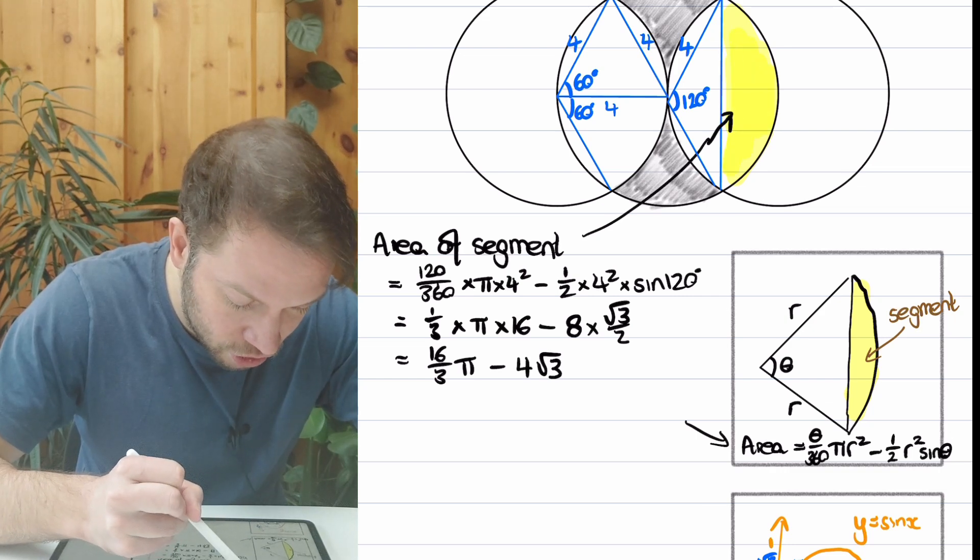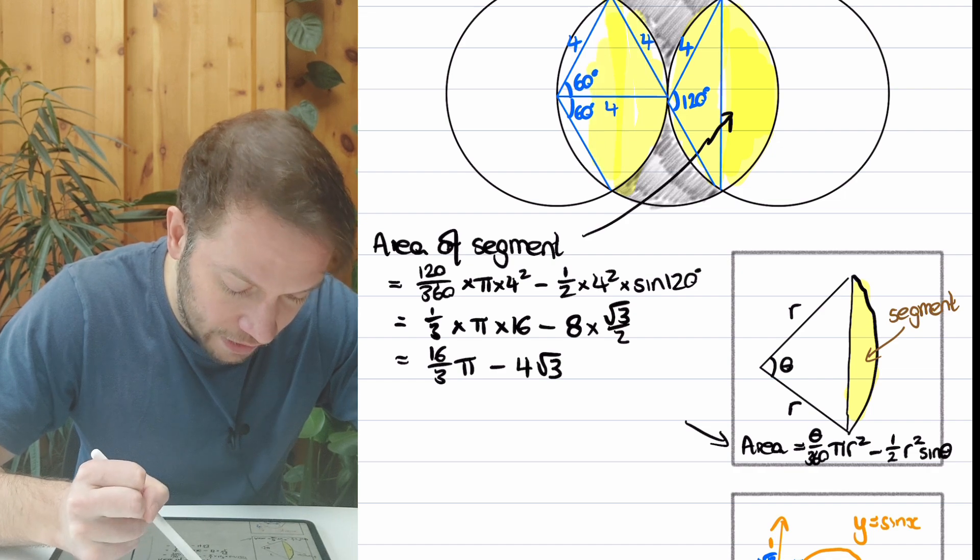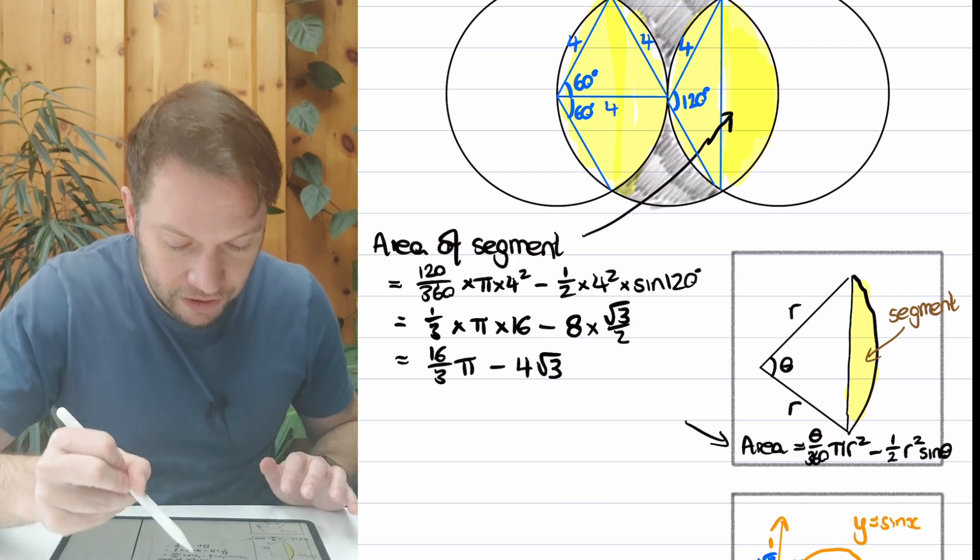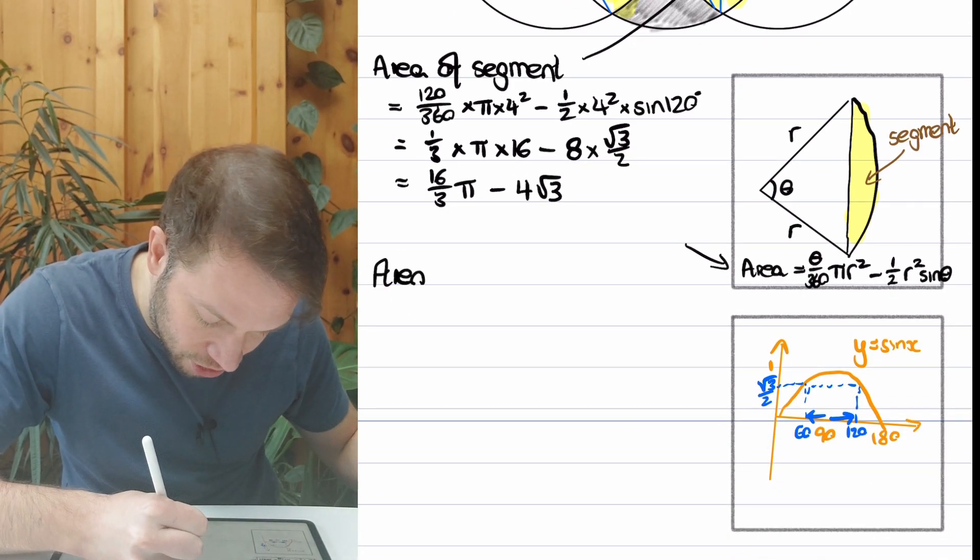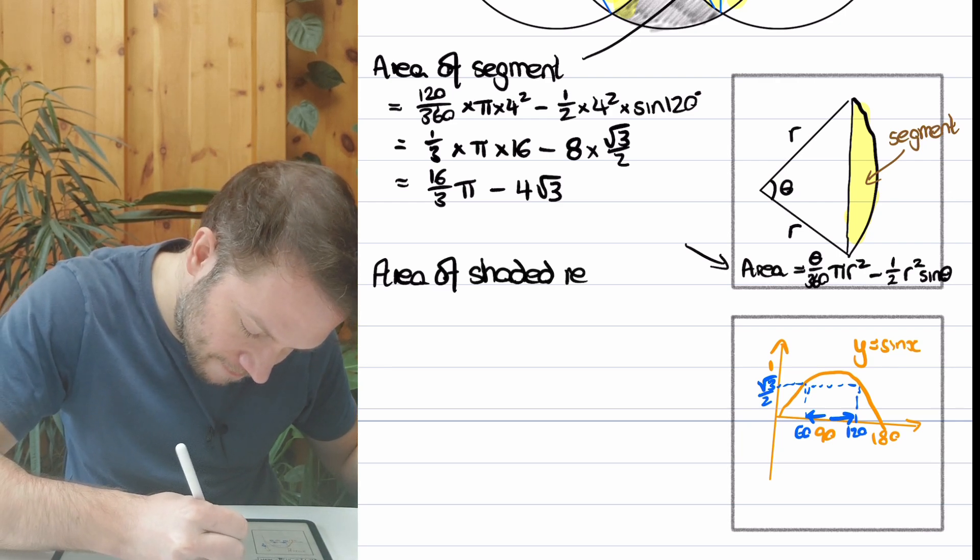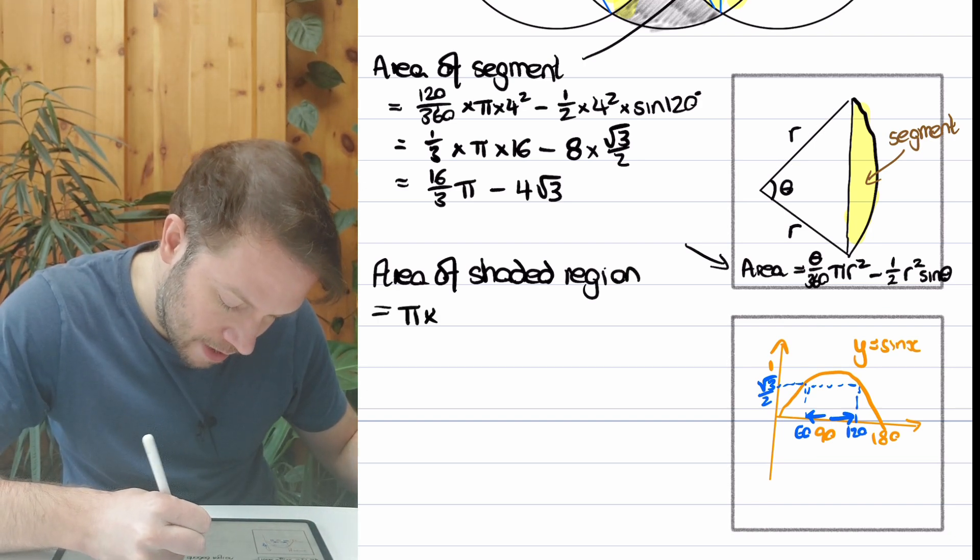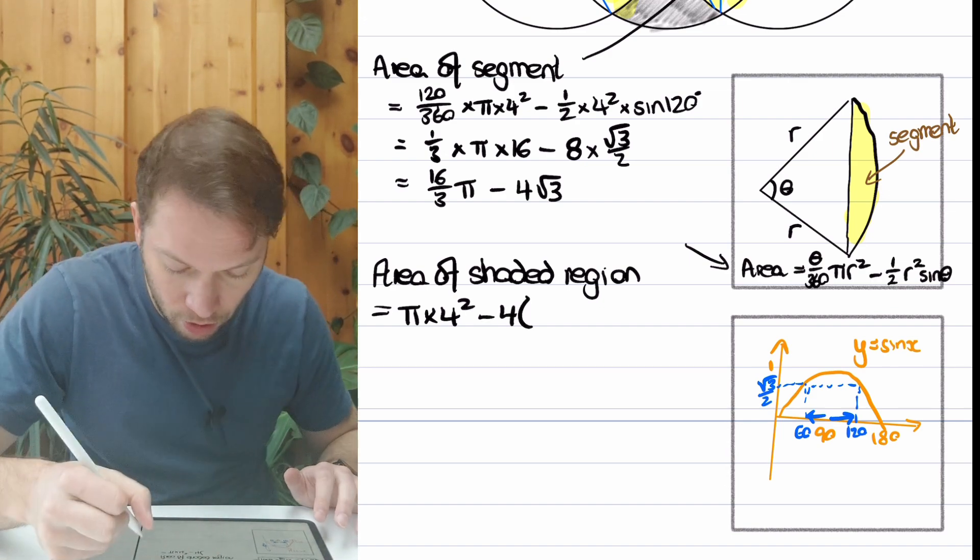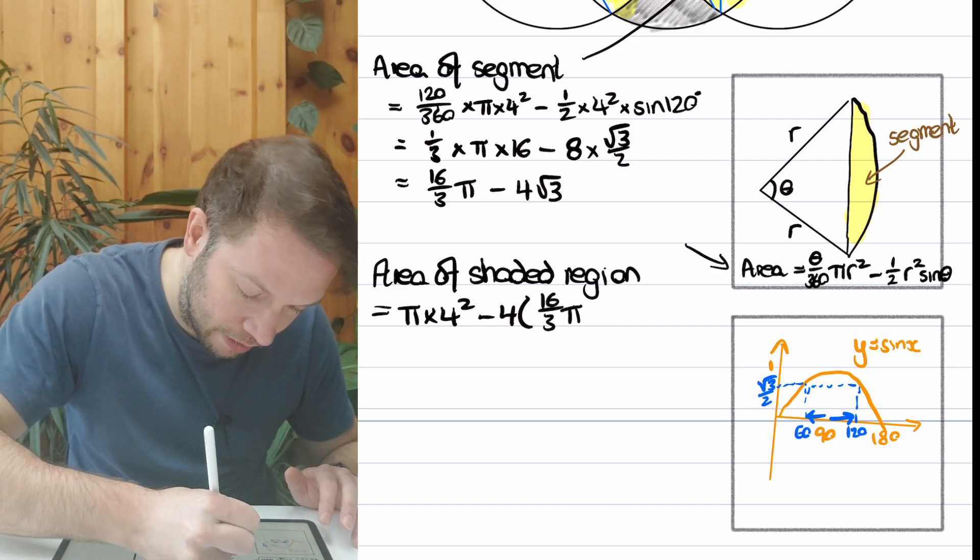How can we find the area of the whole leafy region? We've got one of these segments, two of these segments, three of these segments, and four of these segments. So we've got four lots of segments that is what we want to cut out from the circle. So the area of the shaded region is: we start with the area of the circle, π times 4², and we're going to subtract four segments. So it's 4 of that area we found above: 4(16/3 π - 4√3).